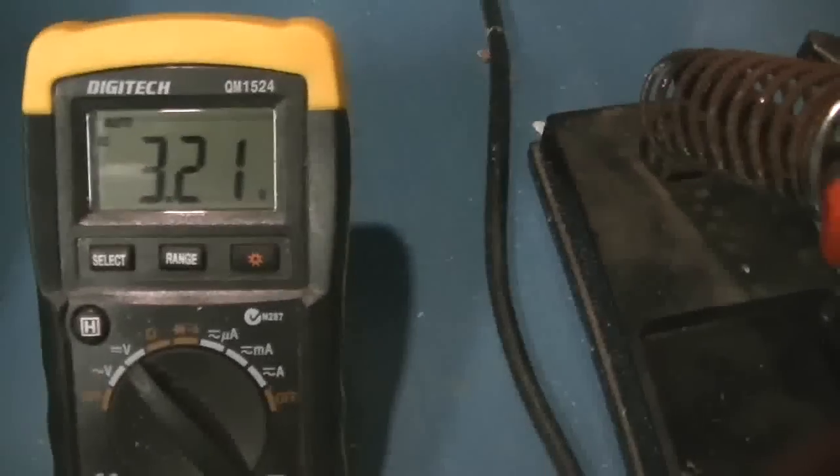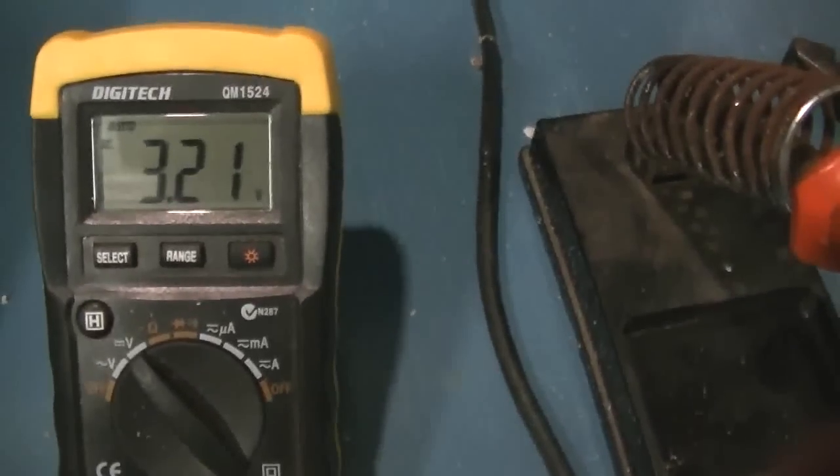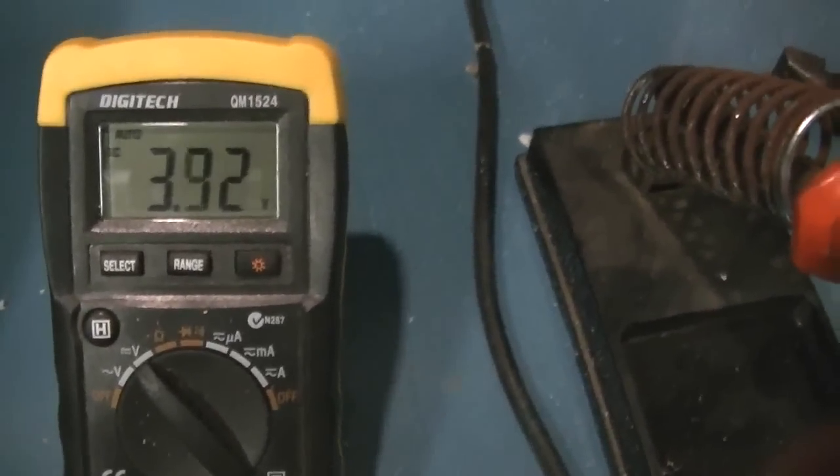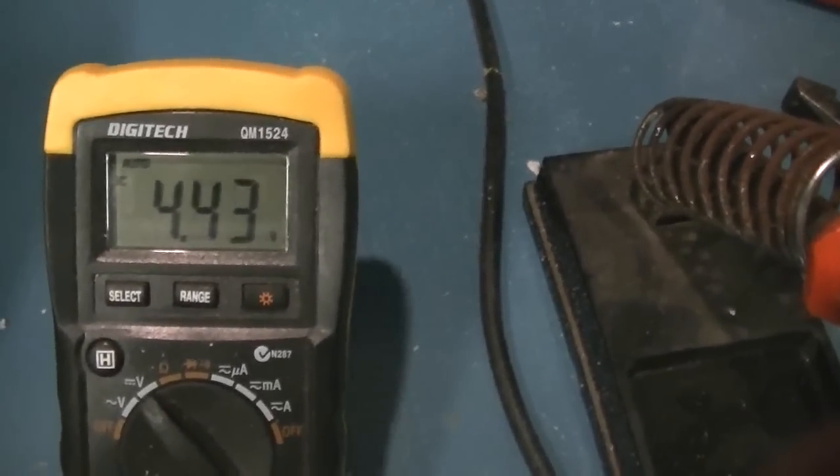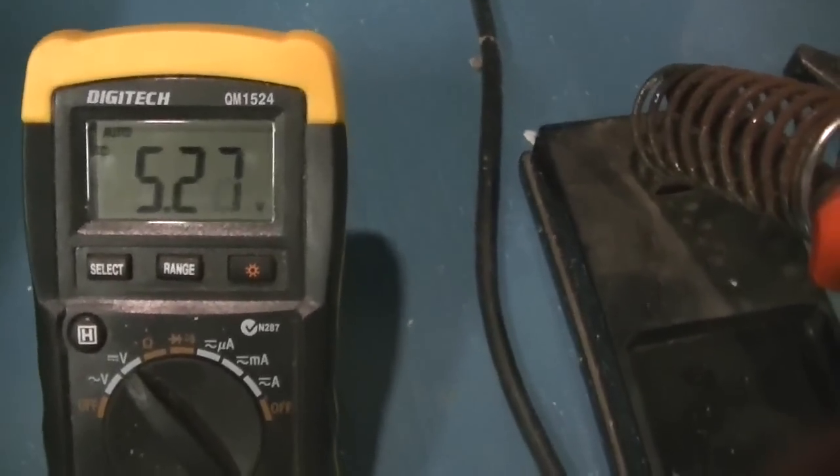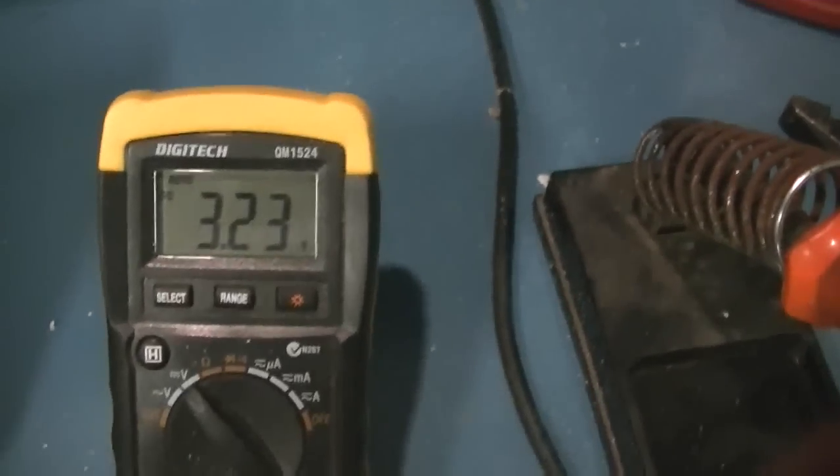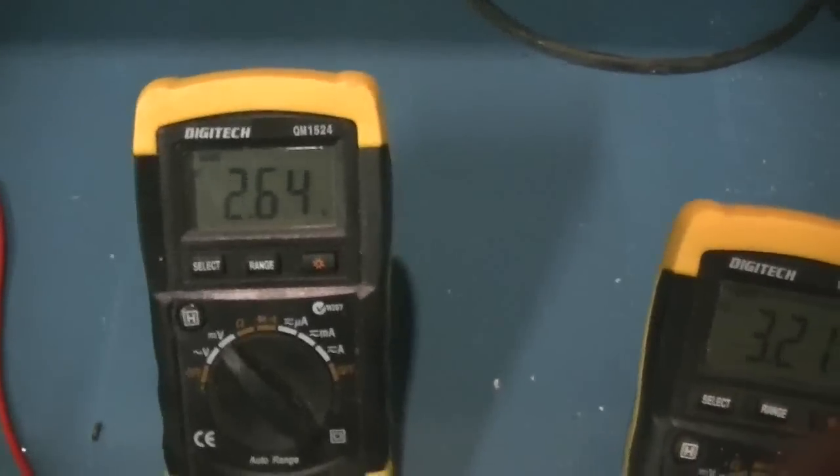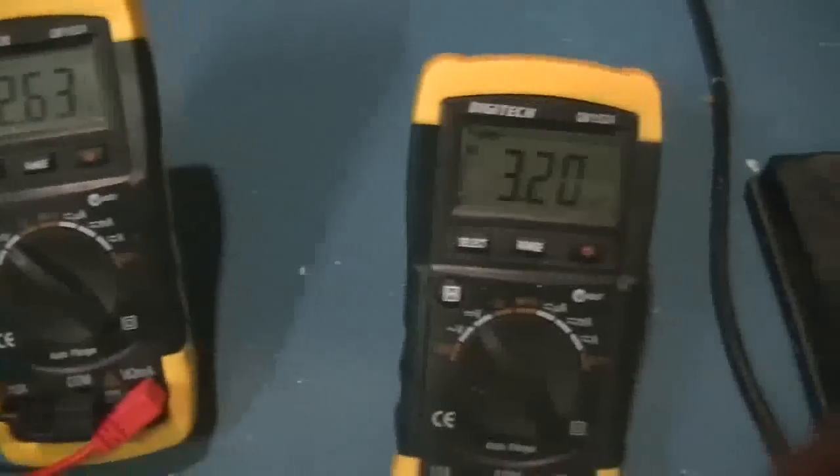You can see the voltage go up when I disconnect it from our run caps, so it's indeed working well. Hook it back up and it goes back down to our run cap voltage plus the 0.6 volts we're losing through that diode there.